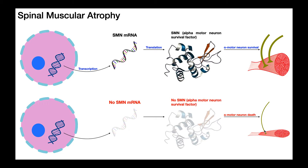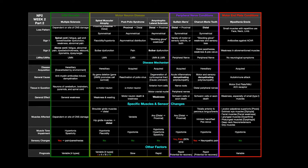In spinal muscular atrophy, as the name suggests, muscles atrophy because they're not receiving innervation from the alpha motor neurons — and again, it happens progressively over time. Spinal muscular atrophy is one of our motor neuron diseases, along with post-polio syndrome and amyotrophic lateral sclerosis (ALS). These motor neuron diseases differ from a peripheral nerve disease in one major way: a peripheral nerve contains both motor and sensory neurons. With a peripheral nerve condition, you get both sensory and motor loss. But with a motor neuron disease, it's only affecting the motor neurons, so you won't see sensory changes.